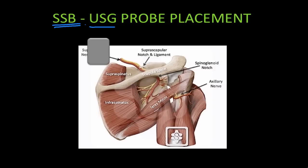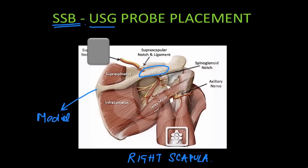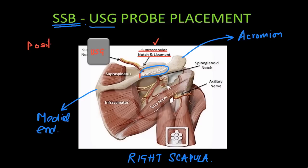For the ultrasound guided suprascapular nerve block, we need to identify the spine of the scapula. In this diagram of the right scapula, the medial end and the acromion process demarcates the lateral end of the spine of the scapula. We need to get near the suprascapular notch which lies midway between these two points.